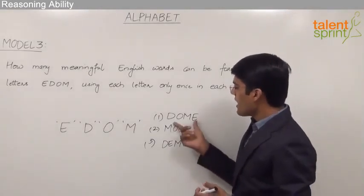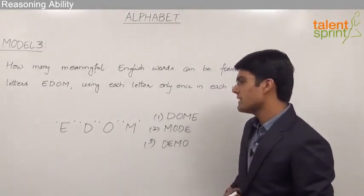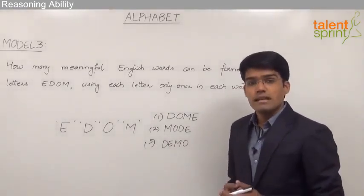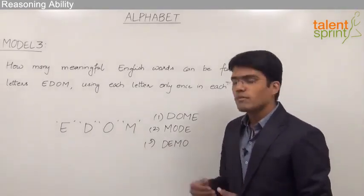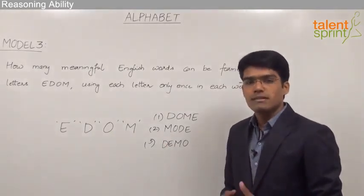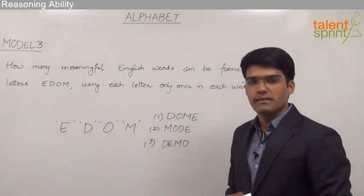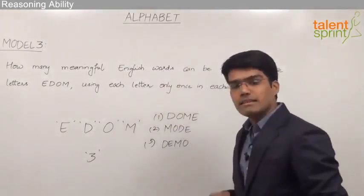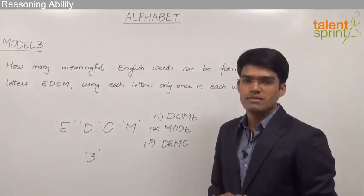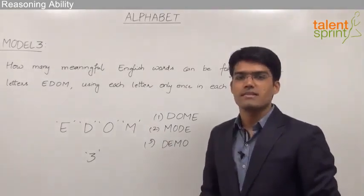The three words which I have made so far are DOME, MODE, and DEMO, and I am not able to make any fourth word out of the given letters E, D, O, M. So I may go ahead with the answer three, but this doesn't mean that there is no other word possible out of these letters. There can be one more word or two more words, but in this limited time I am able to make only three. If you are ready to take a risk you can say the answer is three, but if you do not want to take any chance you simply leave this question and go to the next one, as there is no method which can let you know the correct answer for these types of questions in that limited time in the exam.